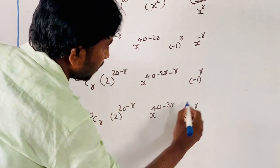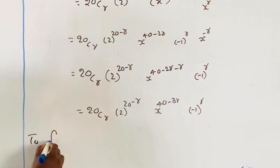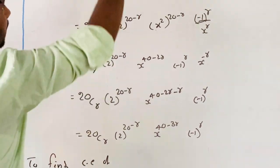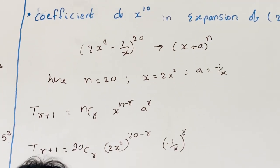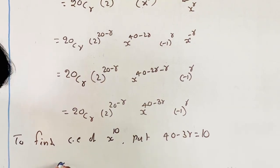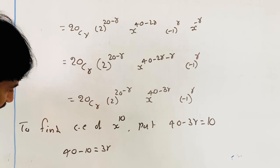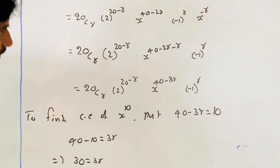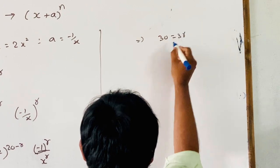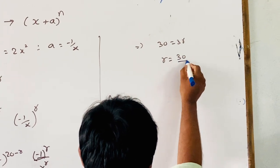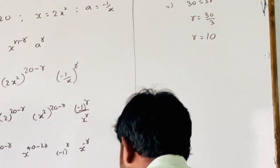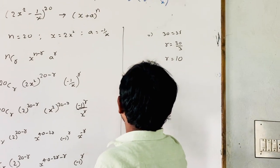To find the coefficient of x¹⁰, put 40 minus 3r equal to 10. Then 40 minus 10 is equal to 3r, that implies 30 is equal to 3r, so r is equal to 30 divided by 3, which gives r equal to 10.